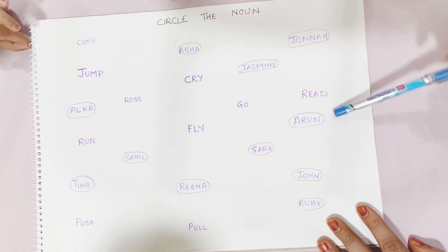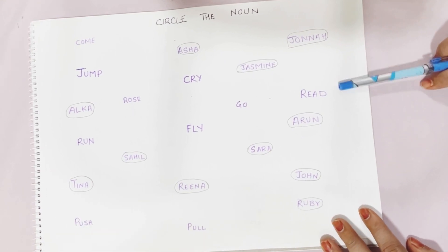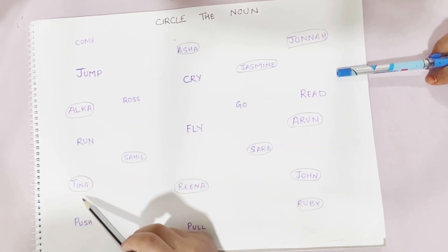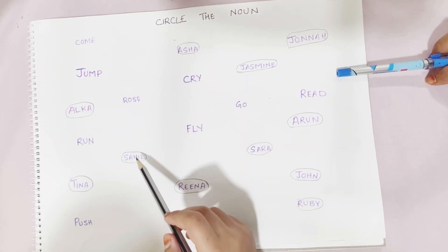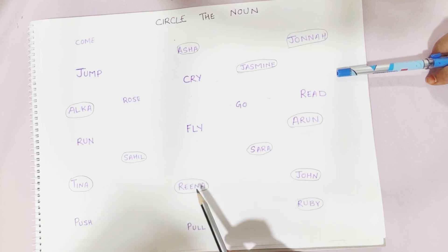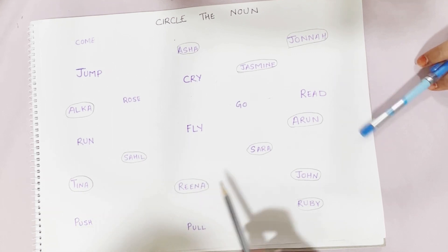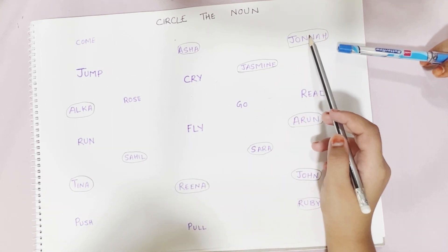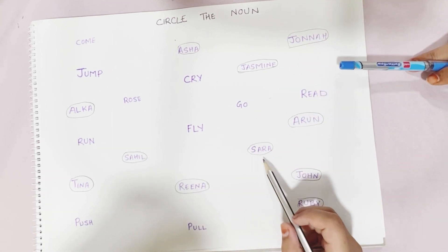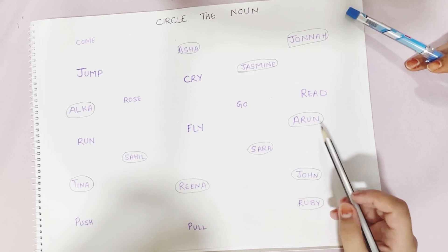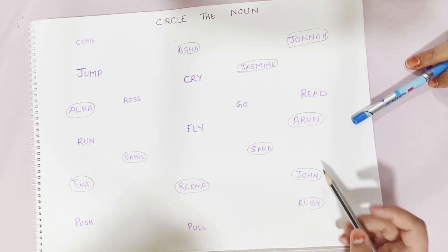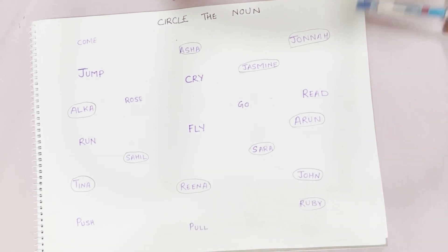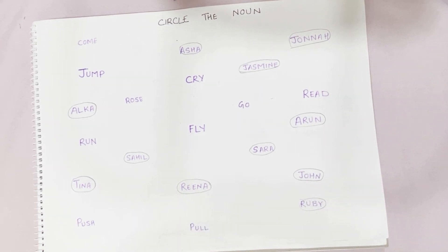Can you read all the nouns? Asha. Alka. Tina. Sahil. Reena. Jasmine. Jonah. Sarah. Arun. John. Ruby. Very good.